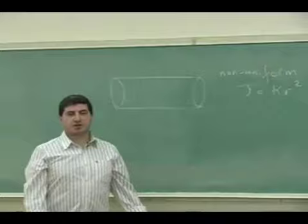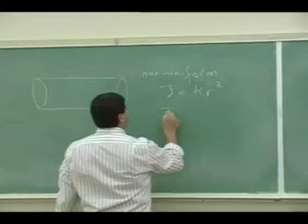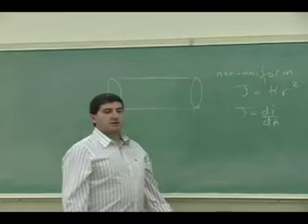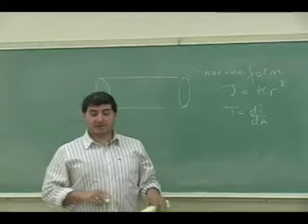So let's say J is the current density, and J is defined as dI over dA. It's how much current is flowing in a surface area, in a certain surface area. So it's equivalent to the surface charge density, sigma kappa R squared. So let's say it's increasing as a function of R.